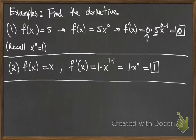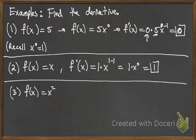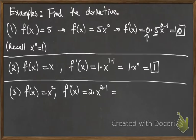Now we'll do x², x³, x^10, x^2.07, and x^(2/3). For x²: bring down the exponent, so the derivative is 2x^(2−1) = 2x. That's our slope-generating function — we actually derived this earlier using the limit definition of derivative.